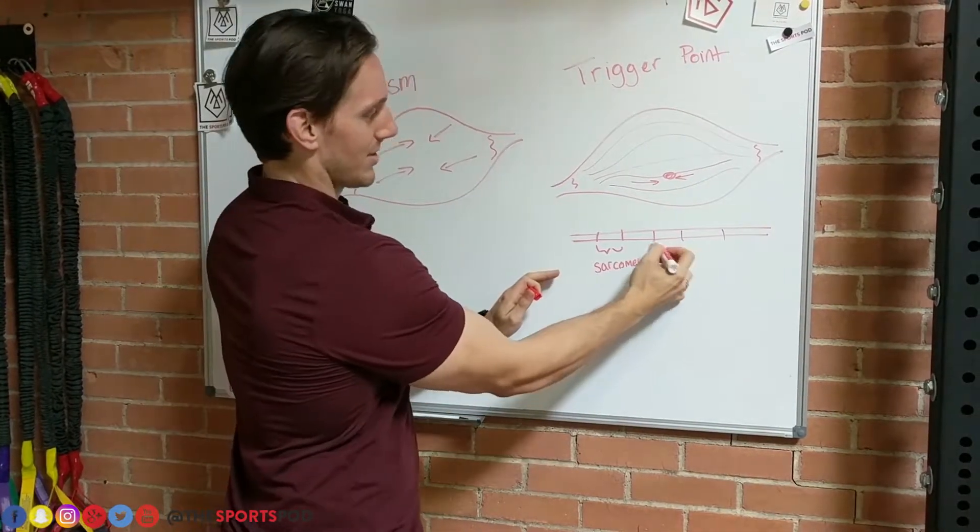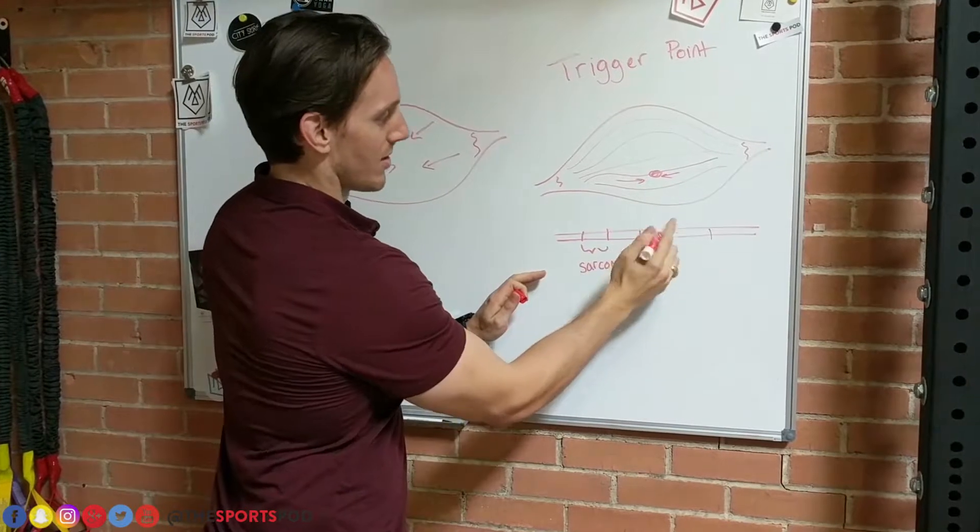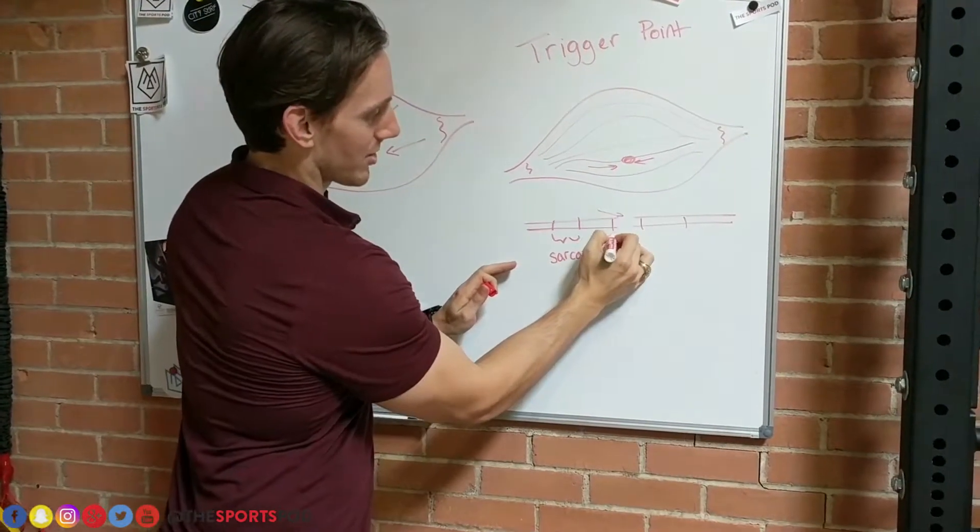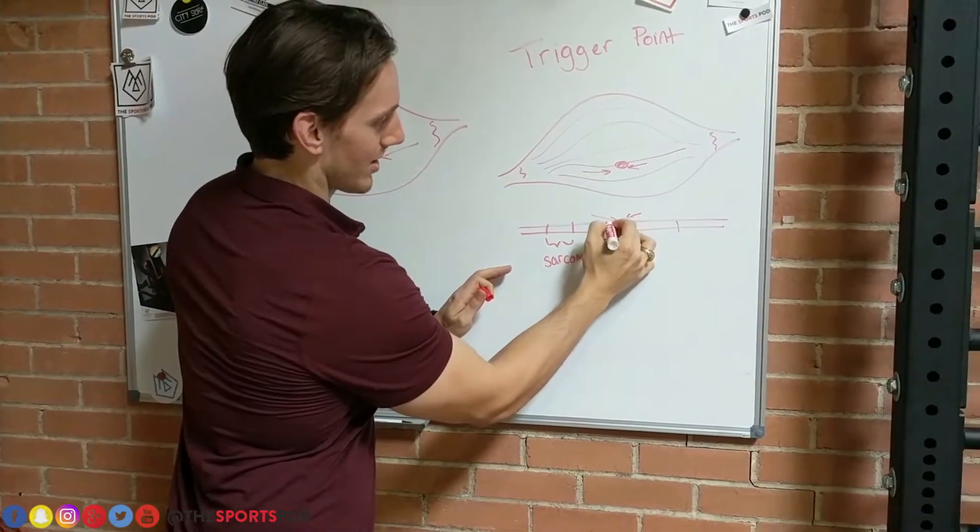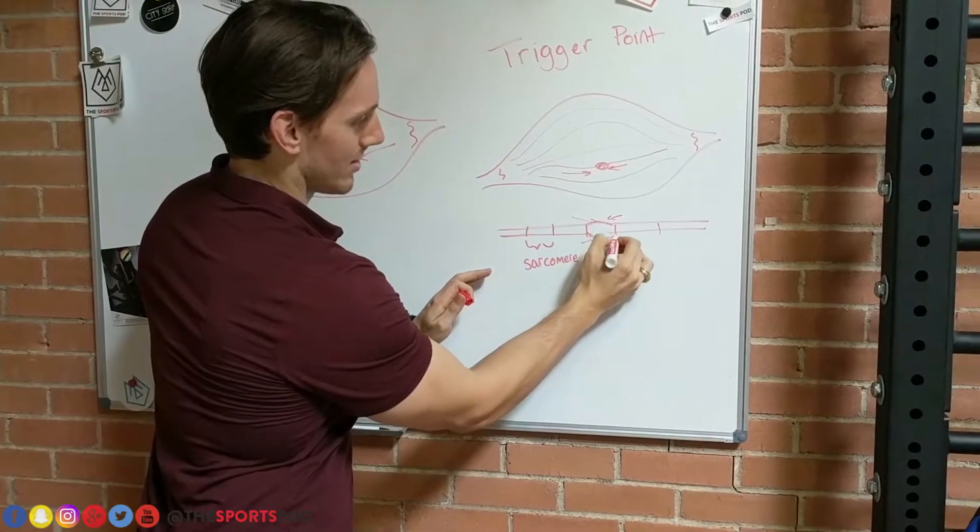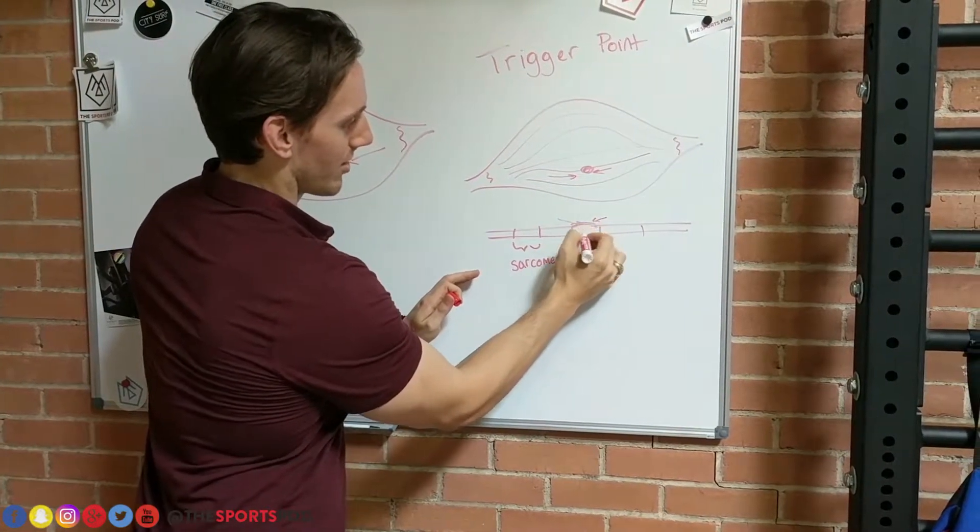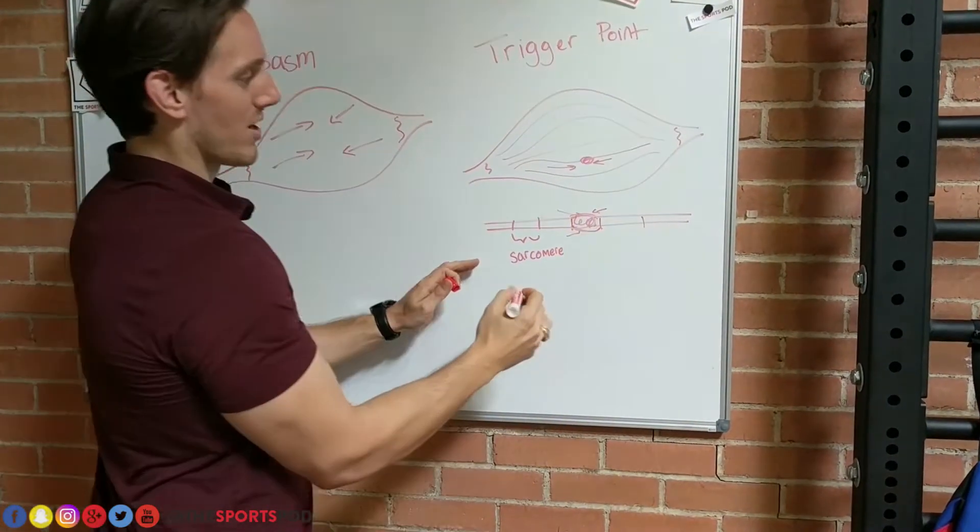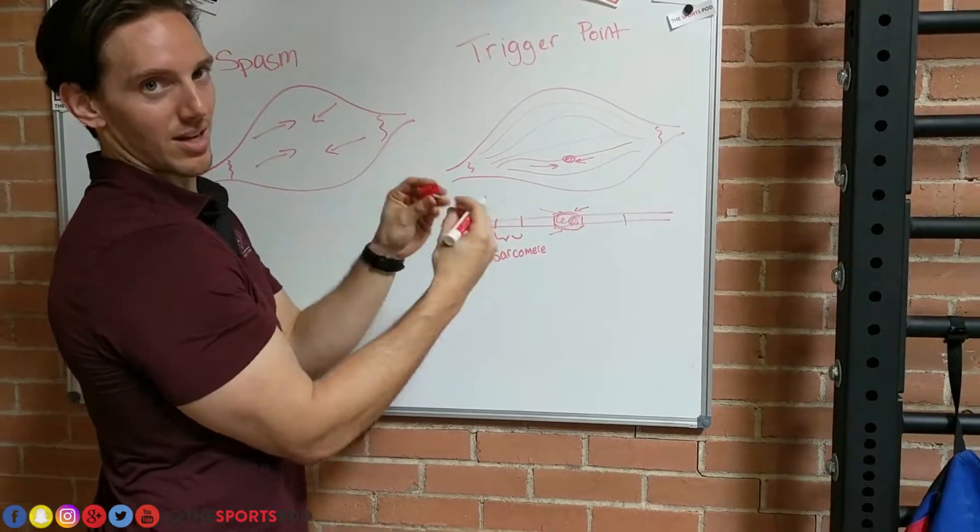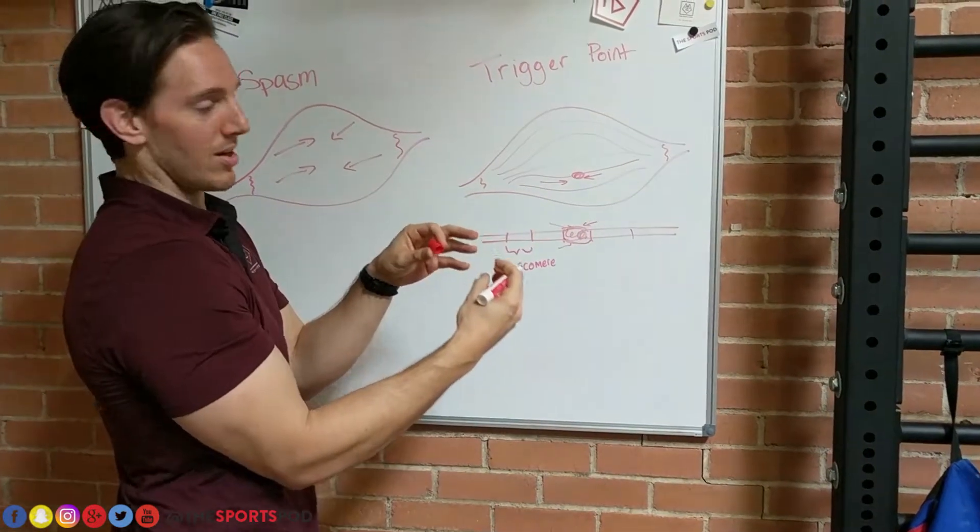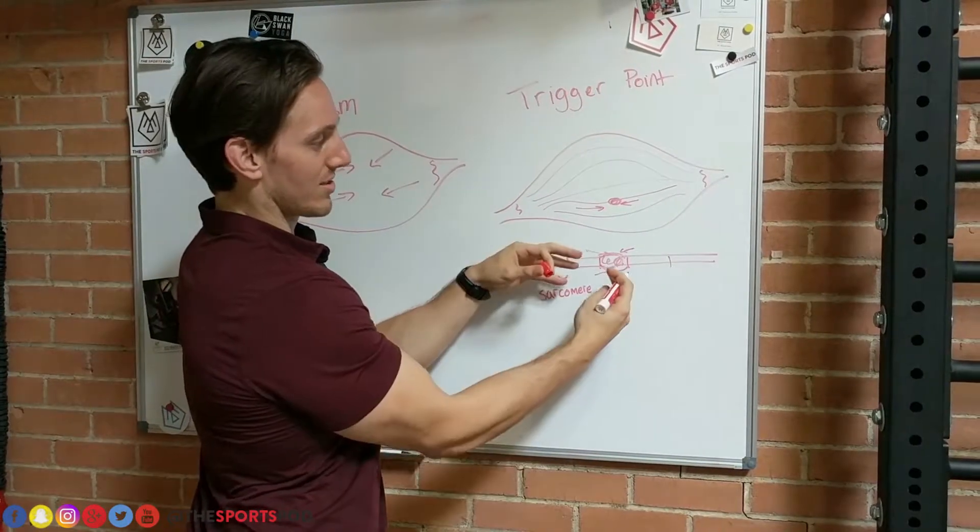So when you have a trigger point, say you have this sarcomere here, you've got an unusually contracted sarcomere. This thing is super contracted, so it gets really hard. That metabolic waste just builds and builds. It doesn't have that pumping motion, so all that waste just sits in there.